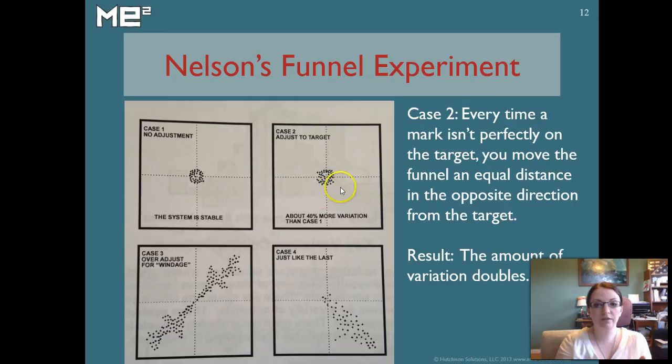In Case 2, the idea was that every time a mark wasn't perfectly on target, you take that funnel and you'd move it an equal distance in the opposite direction. Every time that you dropped a marble here, you'd say, oh dear, I'm too far away from the mark. Let me try moving it over this direction. Maybe then I'll hit the mark. Then when you don't, you move it the opposite direction and the opposite direction, over and over again constantly trying to hit that mark. When that happens, the amount of variation increases. About 40% he found. You're actually making the situation worse by overcorrecting.